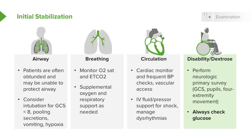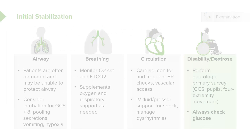Lastly is D — disability or neurologic assessment. We always check a neurologic primary survey in every patient, including GCS, pupillary exam, and four-extremity movement. And never, ever forget to check a glucose. Any patient with a depressed mental status always needs to be checked for hypoglycemia.